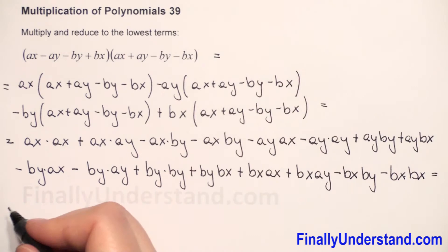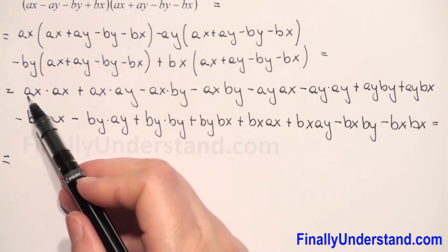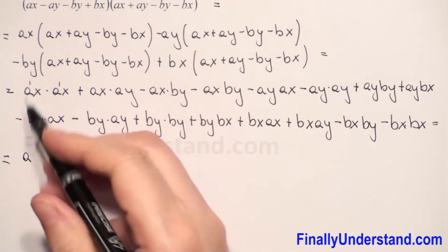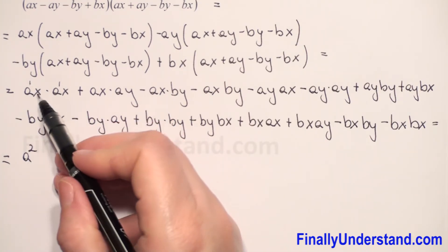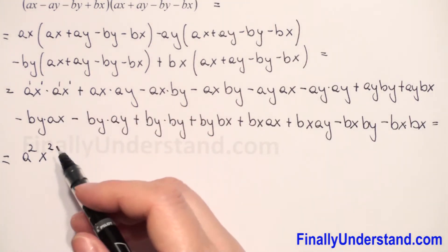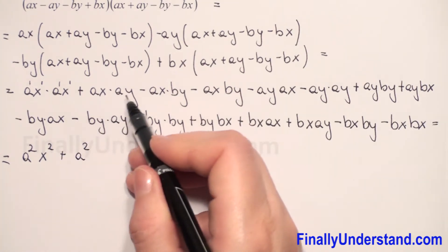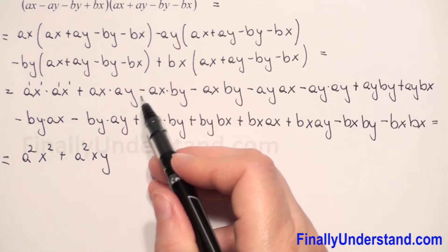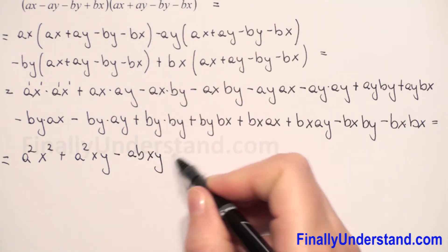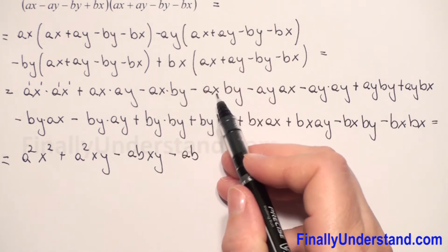So this is equal. First we will do the multiplication. The same variable A and A — we copy the base and add exponents, invisible 1 plus 1 equals 2 — so A times A is A squared. X times X is also X squared. So we get A squared X squared, plus A squared XY. Next we have a negative sign: AB, and next XY, then another negative sign: AB XY.